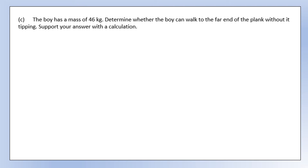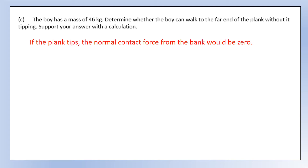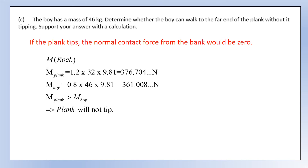A boy of mass 46 kilograms: determine whether he can walk to the far end of the plank without it tipping, supporting your answer with a calculation. If the plank is going to tip, it will be when the boy has walked past the rock, and tipping occurs when the normal contact force from the bank becomes zero. Taking moments about the rock, the boy is at most 0.8 meters from the pivot, while the centre of mass of the plank is 1.2 meters from the rock. The moment from the plank is greater than the moment from the boy, so the plank will not tip and stays in contact with the bank on the opposite side.